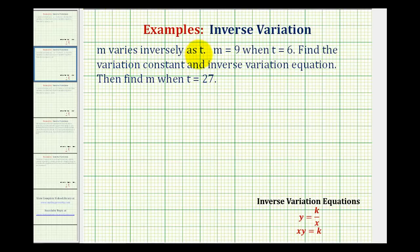Here we're given m varies inversely as t. This is important because it tells us which variation equation to use.